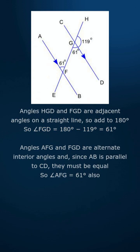Angles HGD and FGD are adjacent angles on a straight line, so they add to 180 degrees. So angle FGD equals 180 degrees minus 119 degrees, which equals 61 degrees.